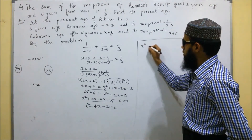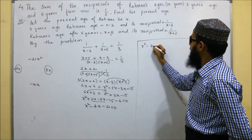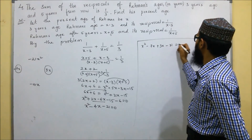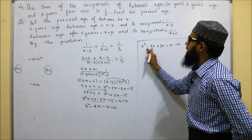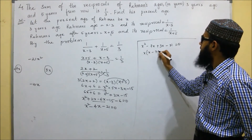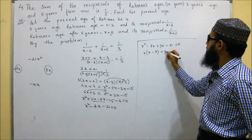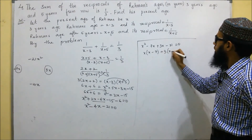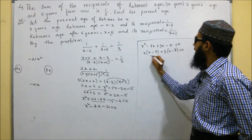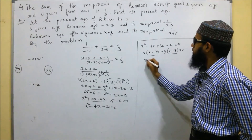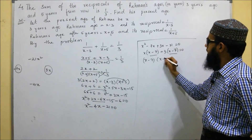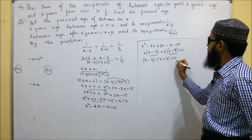In place of minus 4X we substitute minus 7X and plus 3X. So it becomes X squared minus 7X plus 3X minus 21 equals zero. Taking X common from the first pair: X(X minus 7), and 3 common from the second pair: 3(X minus 7). So (X minus 7)(X plus 3) equals zero.